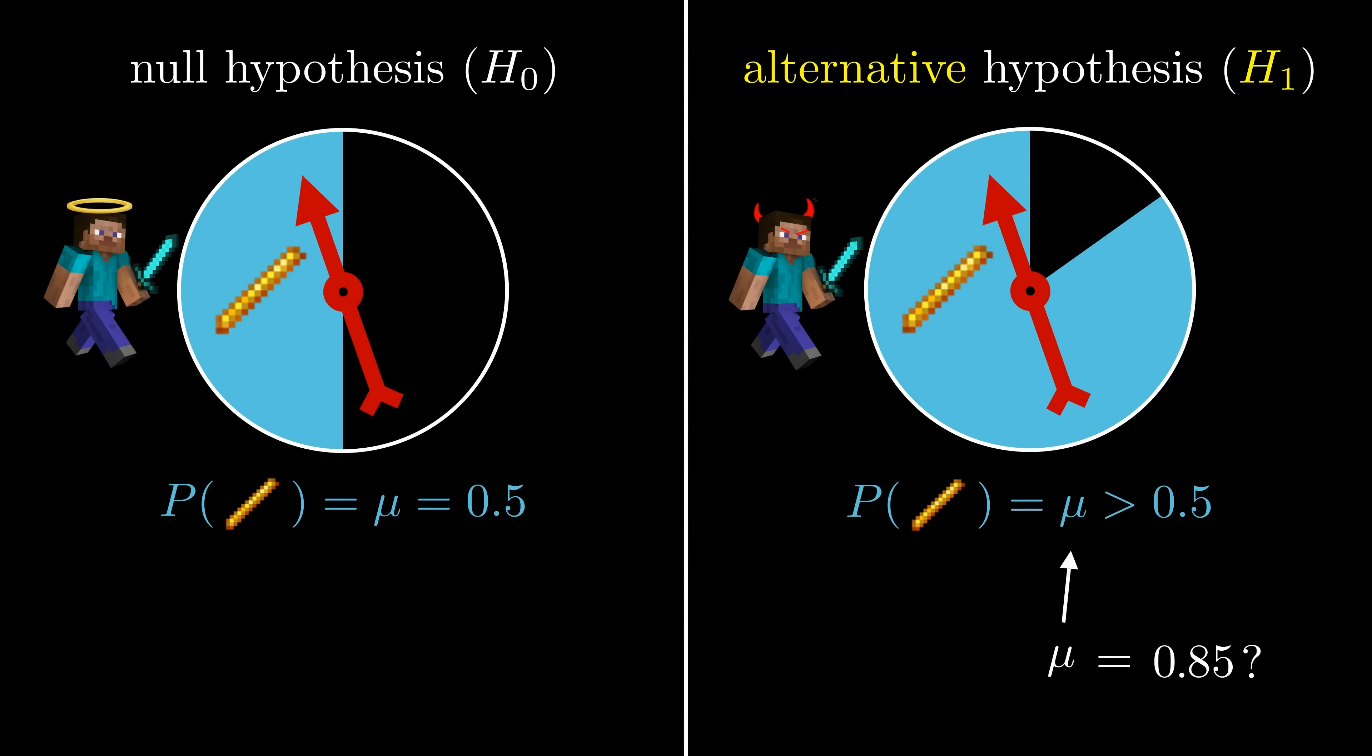On the other hand, look at the world where our friend got lucky, the null hypothesis. In this world, we know that mu is exactly 50%. That's how the game's supposed to be coded. So we can calculate additional probabilities in this world.